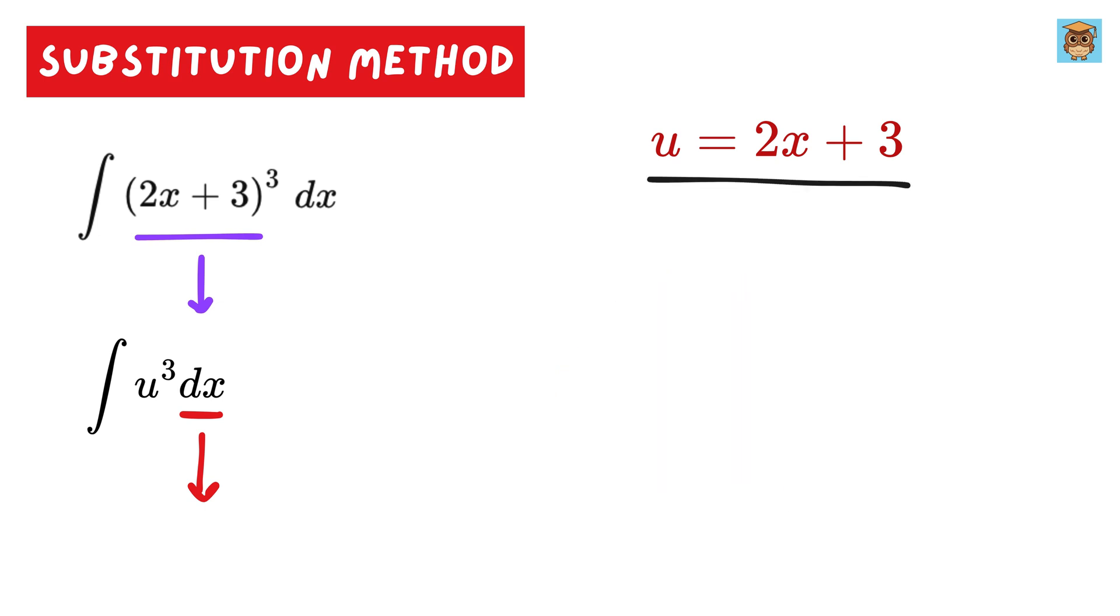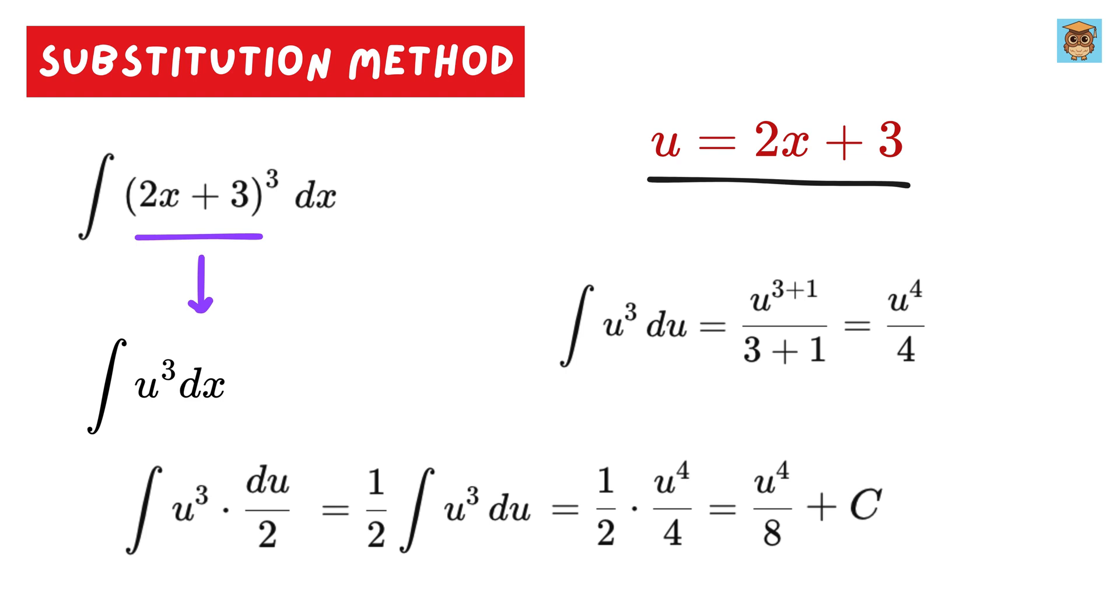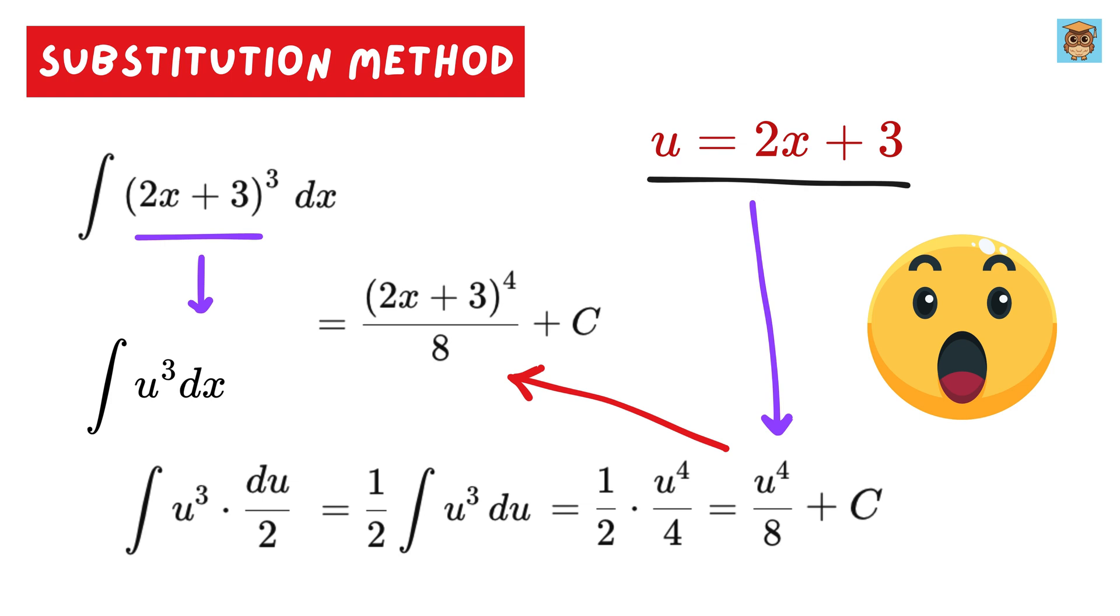But how? For that, we have this u as 2x plus 3. Now differentiate this u with respect to x to get du by dx equals 2, isn't it? Its derivative will be 2. So we can rewrite this dx as du over 2 and substitute it here to get our integral as u cube times du over 2. Take this half outside to get u cube du here and this is simple to solve. It will be 1 by 2 times u raised to 4 over 4 plus c or u raised to 4 over 8 plus c. Now, again, replace this u with this function of x to get the integral of this function as (2x plus 3) whole raised to 4 over 8 plus c. And that's it. See, it became so easy to solve it this way, instead of expanding and solving it the usual way.